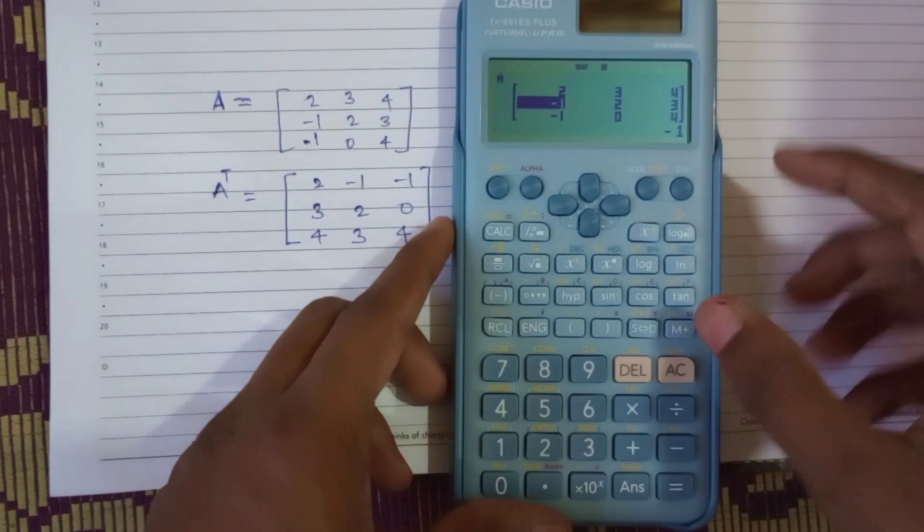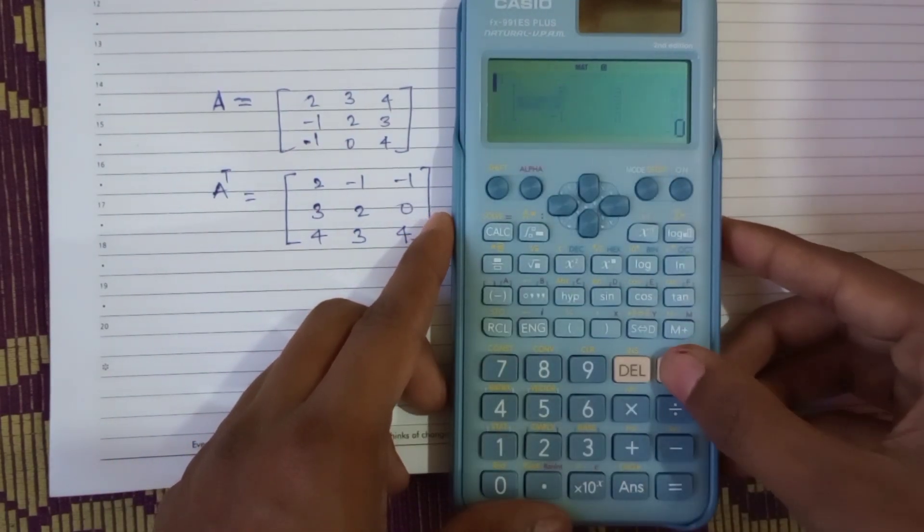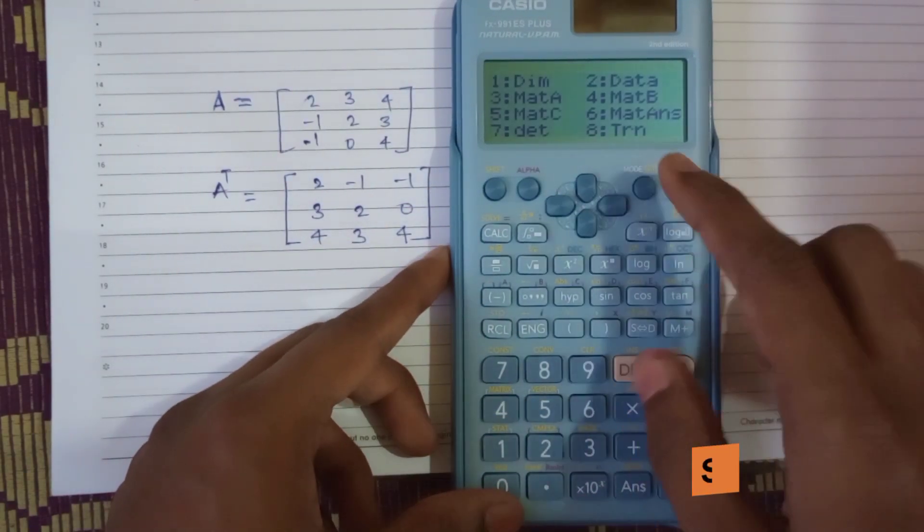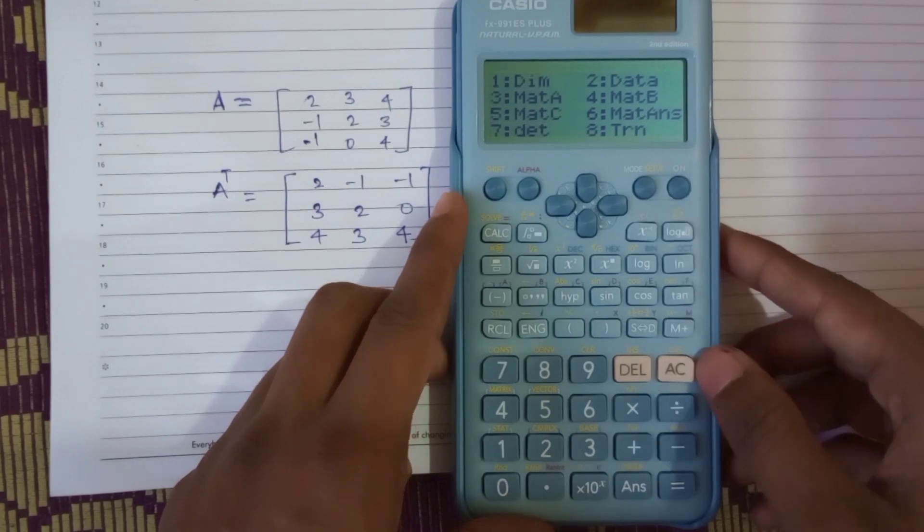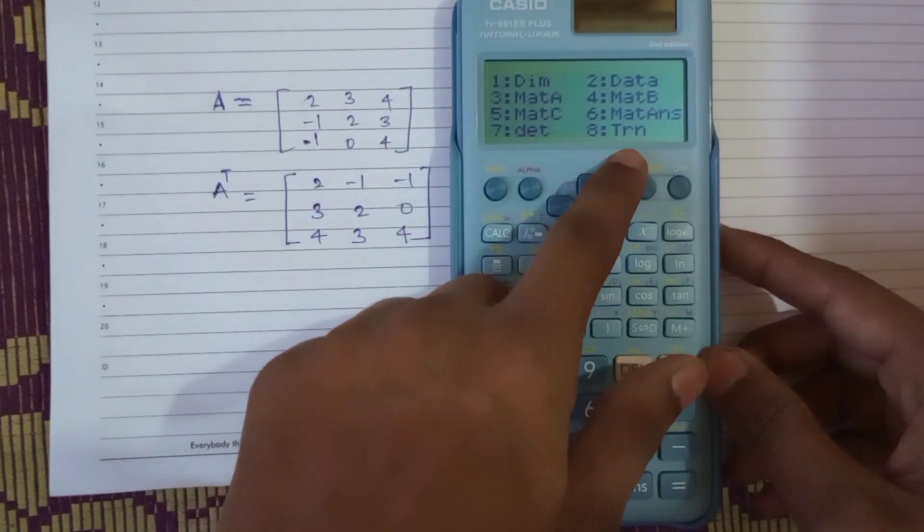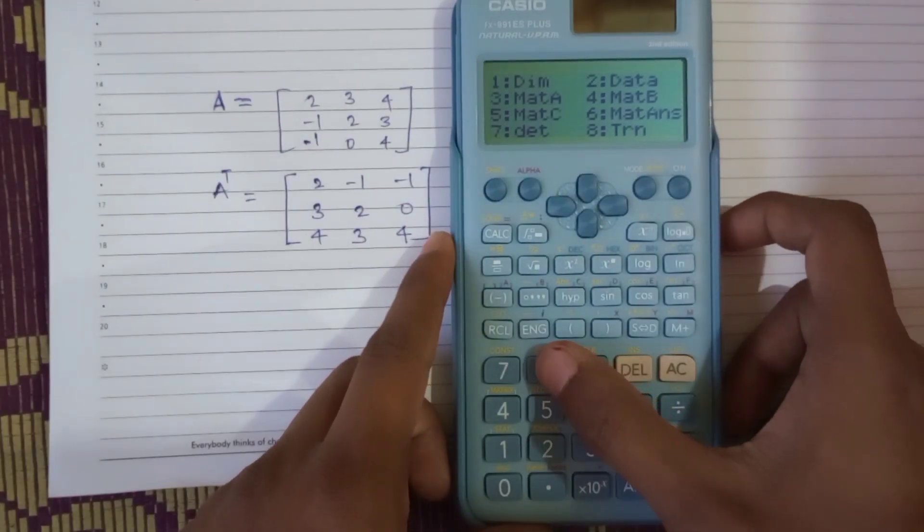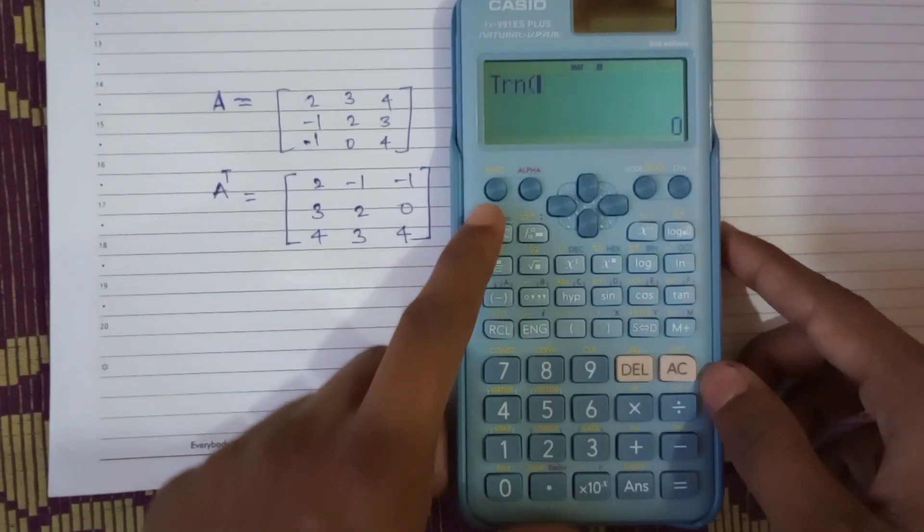Now check the background is clear. AC, that is clear. Now press shift plus 4. You have got the menu of matrix. So we have to transpose it. The question is to transpose the matrix, so we have to press the 8 and it's transpose.